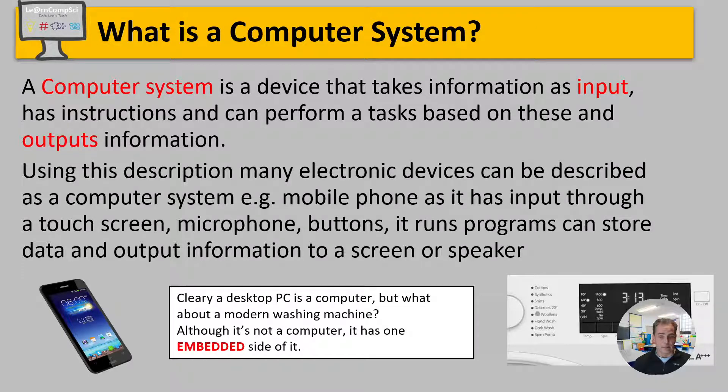But let's think about something else now let's think about something like a washing machine is a washing machine a computer well clearly not okay it's a washing machine but does it maybe have a computer embedded inside of it okay so well if we start to think about what a washing machine does a modern one will perhaps have an electronic display then it will have some buttons on it and it will have a display on it and also it has devices inside of it that could be classed as inputs and outputs to the embedded computer within that washing machine.